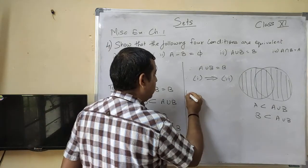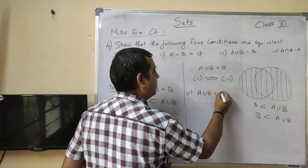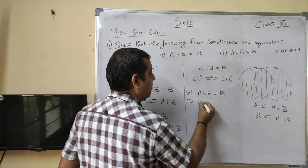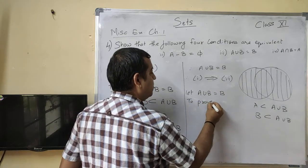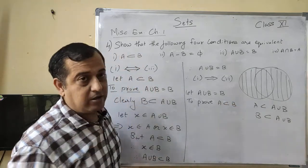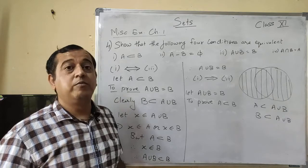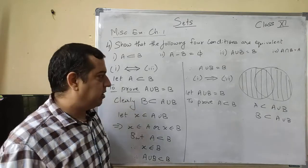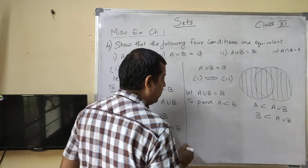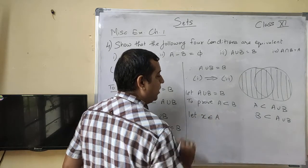Third हम assumption लेंगे. Now let A ∪ B = B. A ∪ B जो है, वो B है. To prove A is subset of B. हमें proof करना है कि A जो है, वो B का subset है. बहुत simple है — आपको element ले लीजिए A में. Let x ∈ A.